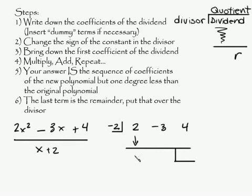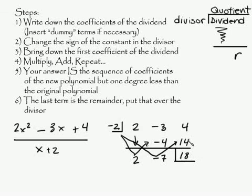You're going to bring down the 2, and multiply negative 2 times 2, and you get negative 4. Negative 3, negative 4, add them going down, it's going to give you negative 7. And multiply negative 7 times negative 2, and you're going to get a positive 14, and 4 and 14 is 18.